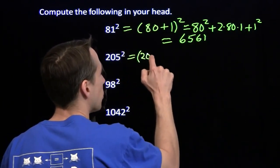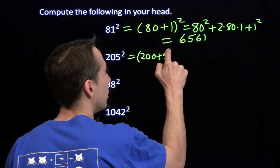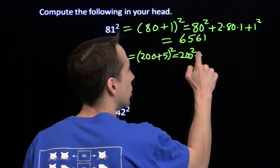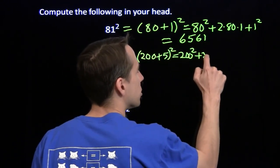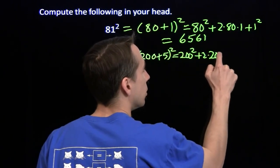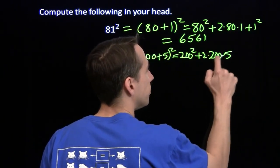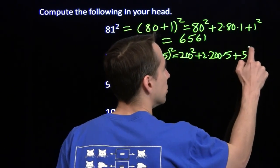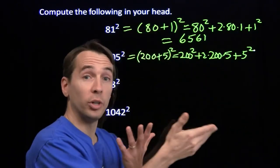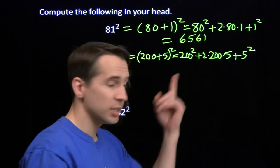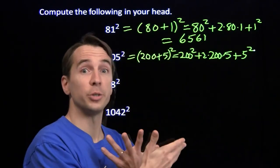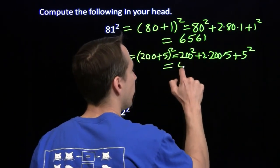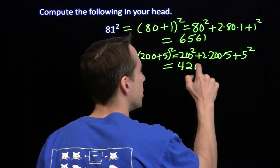205 squared is 200 plus 5 squared. That gives us 200 squared plus 2 times 200 times 5 plus 5 squared. 200 squared is 40,000. 2 times 5 is 10, times 200 is another 2,000. So that's 42,000 plus 25, giving 42,025.